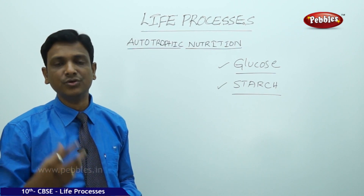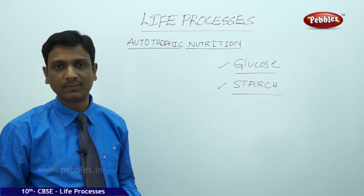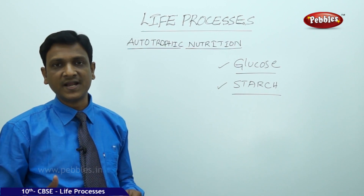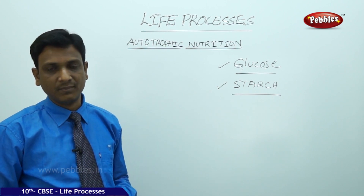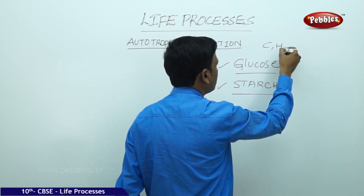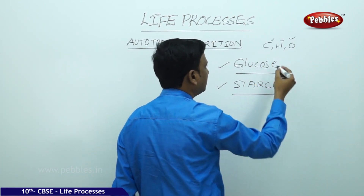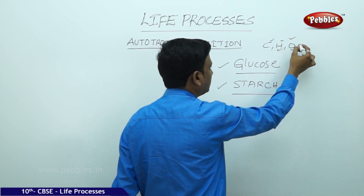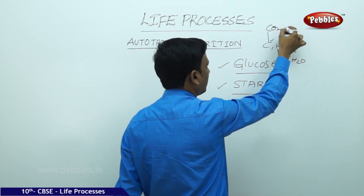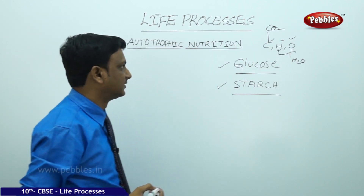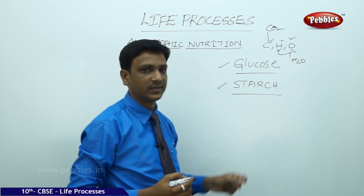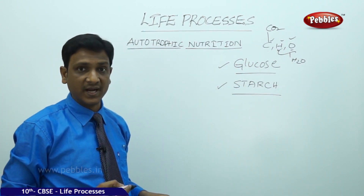To make proteins, nitrogen is required. To make carbohydrates, carbon, hydrogen, and oxygen are sufficient. Hydrogen and oxygen are present in water, and carbon is present in carbon dioxide. So the plant gets carbon, hydrogen, and oxygen from carbon dioxide and water.